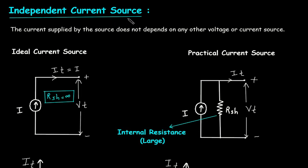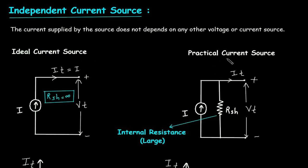Independent current source: the current supplied by the source does not depend on any other voltage or current source. It does not depend on any other voltage or current source, so it is independent. This is the ideal independent current source and this is the practical independent current source.